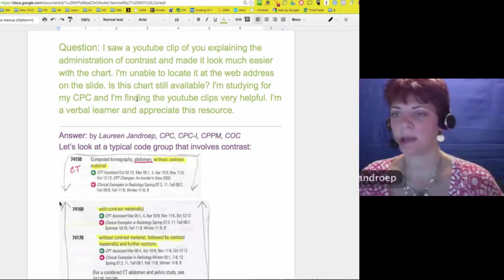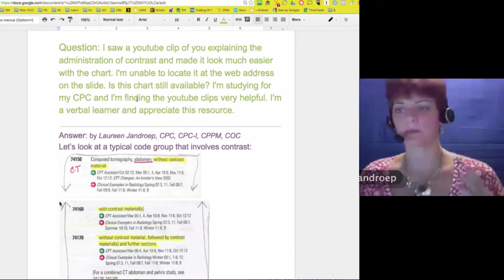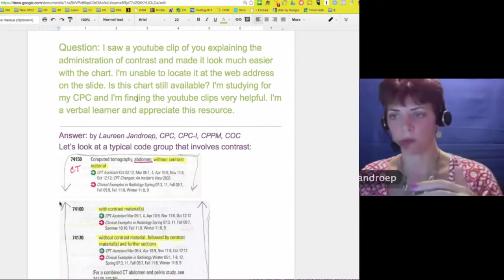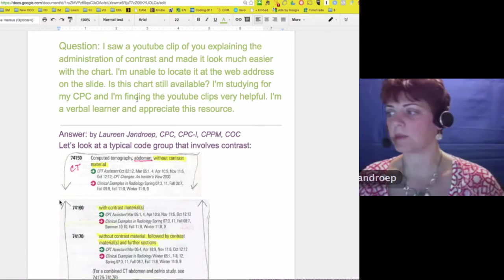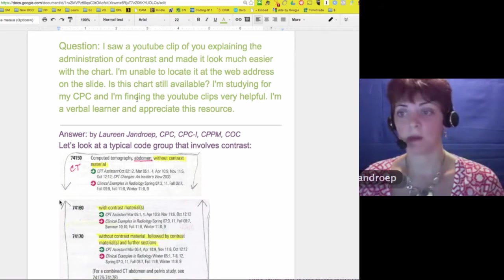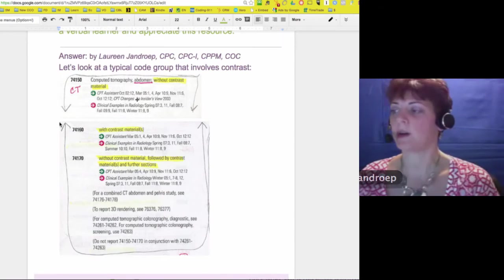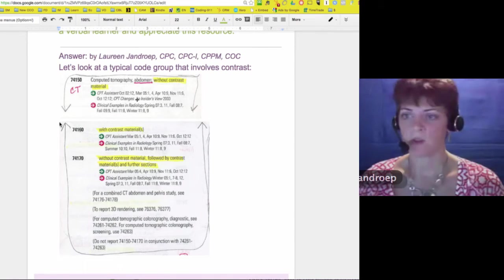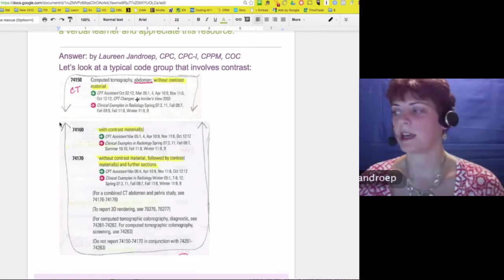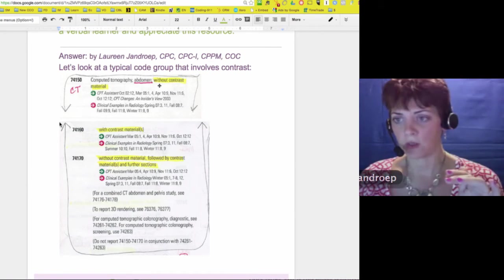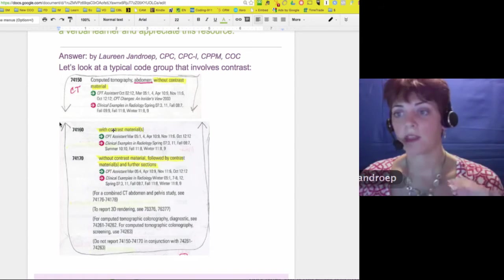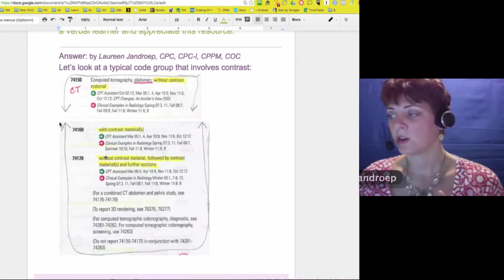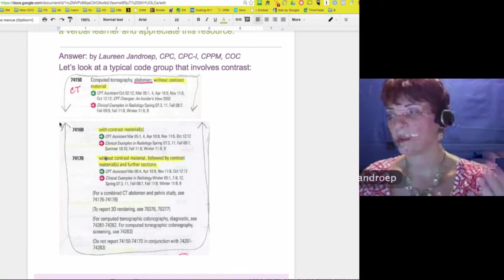What I did is I just took a typical code grouping that deals with contrast for radiology. I'm going to show you the chart in a minute, but I wanted to kind of lead up to it. When you look at these type of codes, normally for CTs or CTAs, the first code is going to say without contrast. The second code is going to say with contrast. The third one is going to say without followed by with.